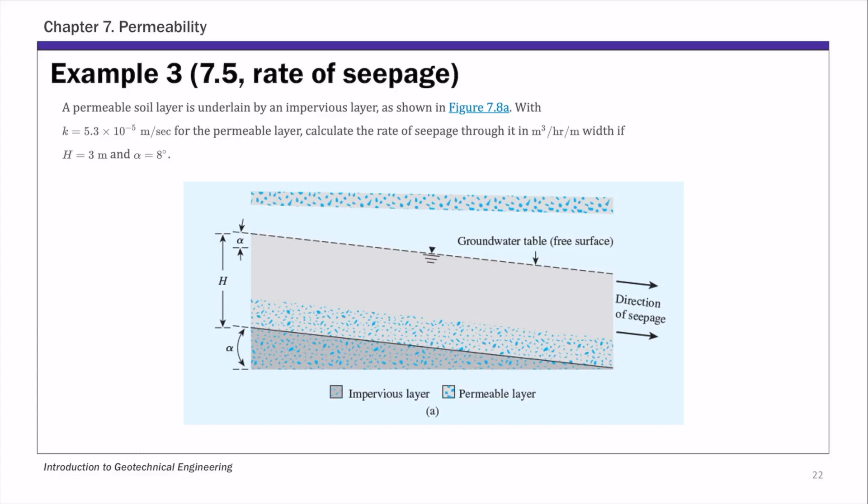This is example three of chapter seven permeability. In this example we are asked to estimate the rate of seepage of basic water flowing through an inclined soil layer.